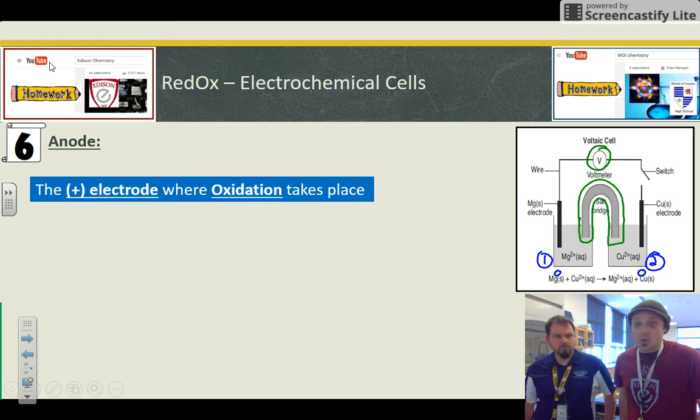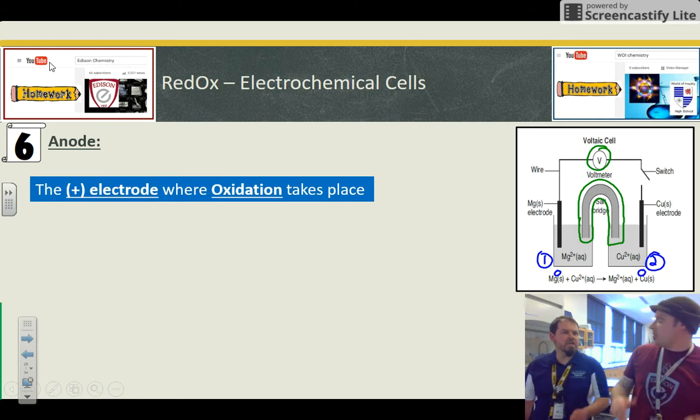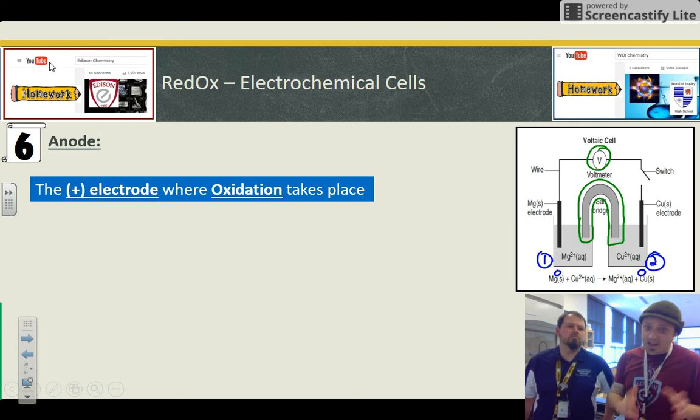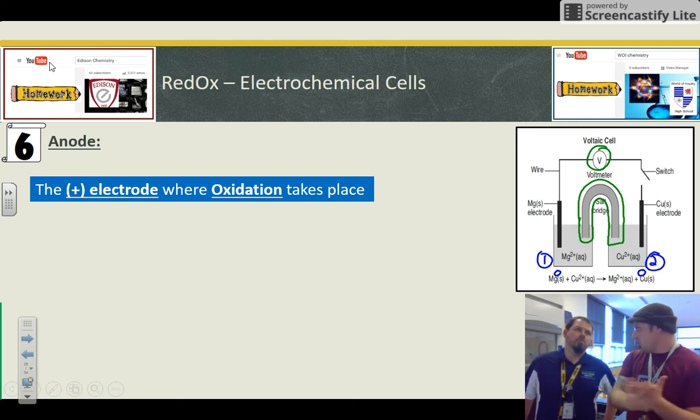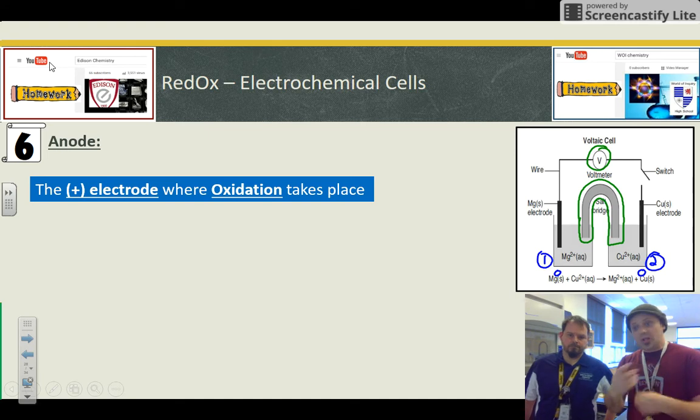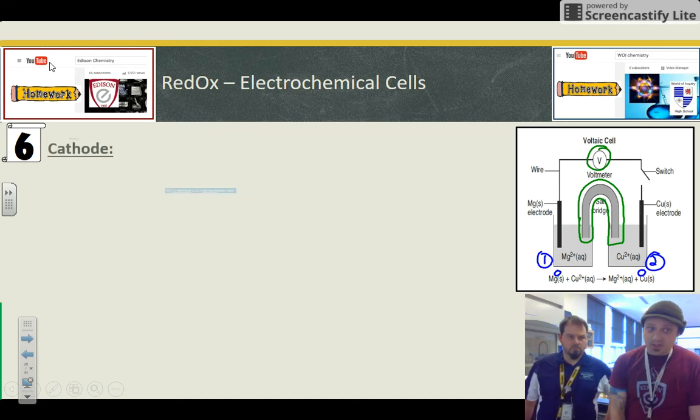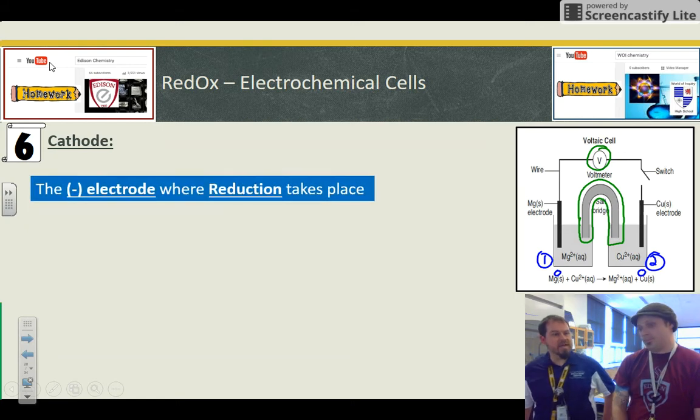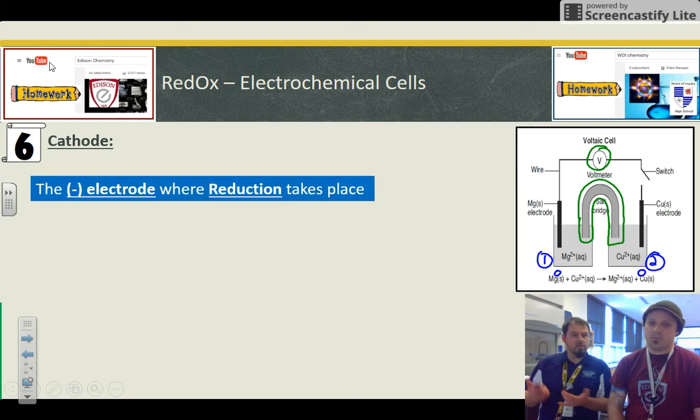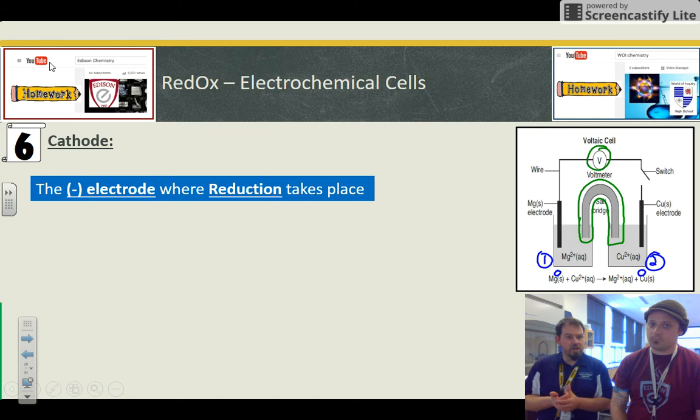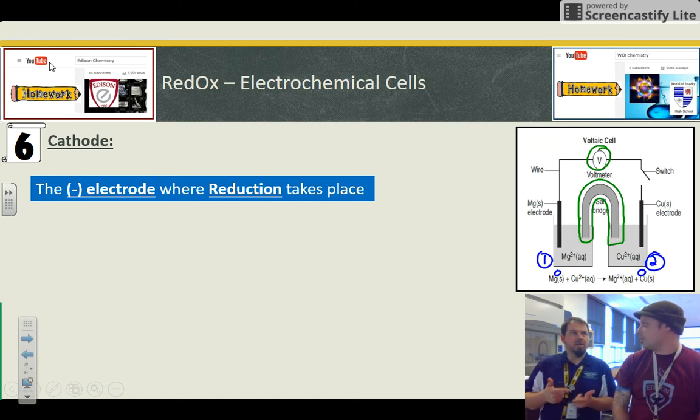So an anode is the electrode that's positive, and it's always where oxidation takes place. Angry ox. Anode, oxidation. And we know oxidation is losing electrons. So we lose electrons into the wire at the anode, the positive electrode. The cathode is the negative, which will draw them over, and where reduction takes place, red cat. Reduction at the cathode.